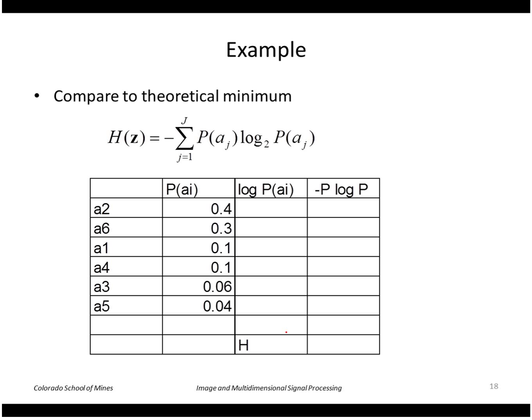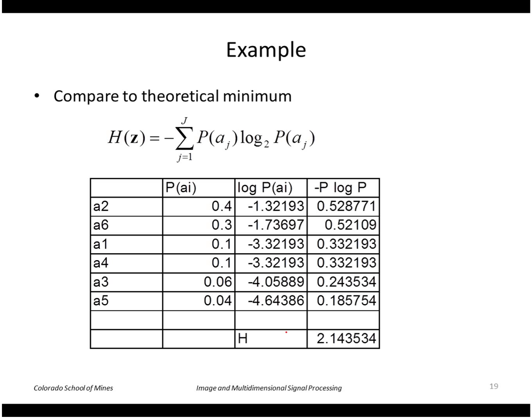To see if that's greater than the theoretical minimum, which it should be, we'll use our formula for computing the entropy of this image using that histogram. That comes out to be 2.14 bits per pixel.